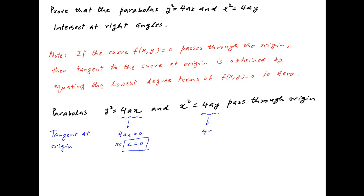Similarly, for the parabola x squared equals 4ay, the tangent at the origin is obtained by equating the lowest degree term 4ay to 0, and therefore the tangent is y equals 0.